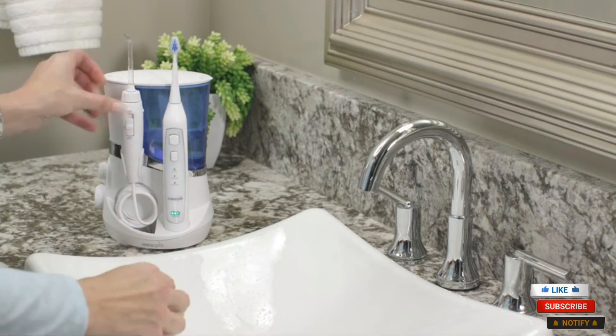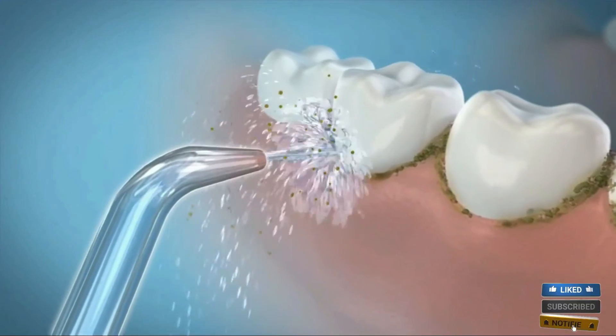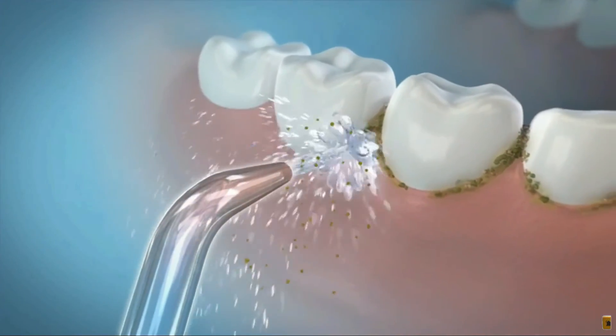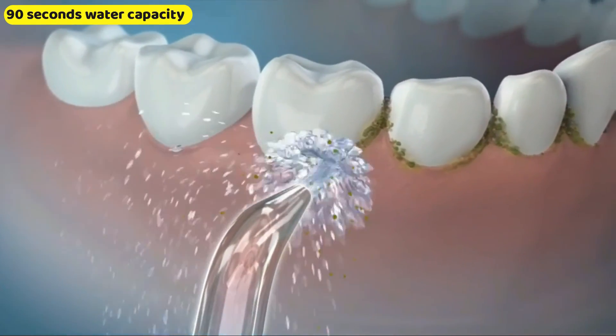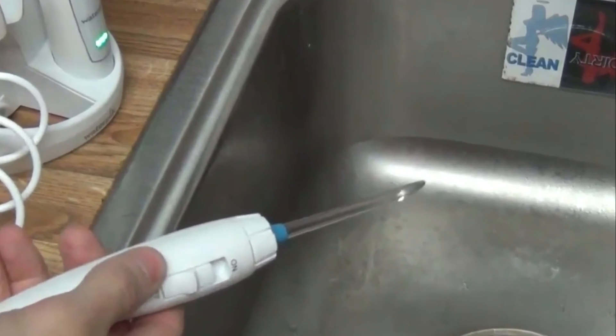The handle base of the water flosser swivels allow an easy access to all parts of the mouth. Holds 22 ounces and has a water capacity of 90 seconds, and refills are necessary. For simple cleaning, the reservoir is top rack dishwasher safe.